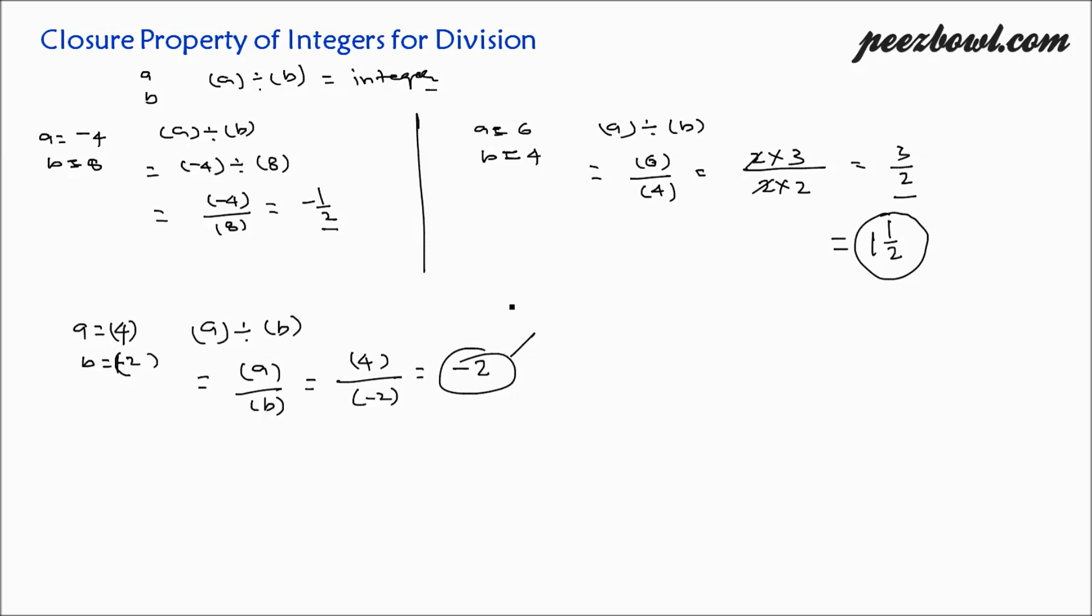In most cases, we find that closure property of integers for division is not true. This is false. So we conclude that this property for integers for division is false. For the majority of integers, this property is not true. You can try different examples, place different variables at the place of a and b, and find for yourself. You will find that most of the time closure property of integers for division is not true.